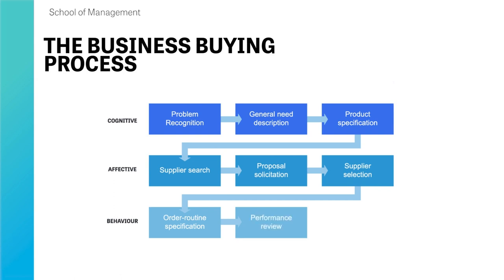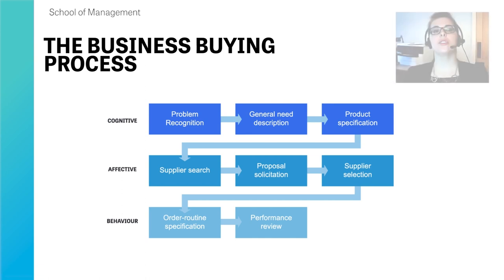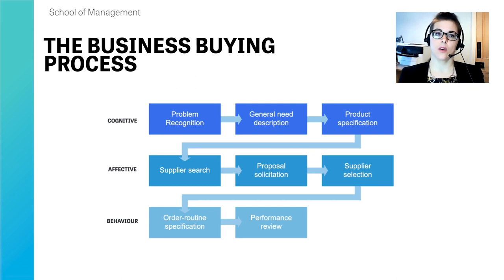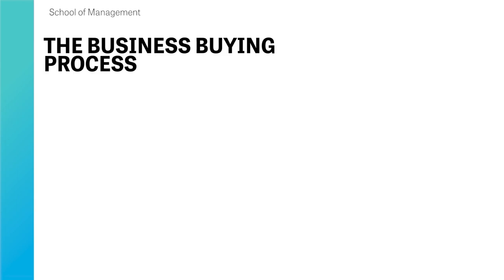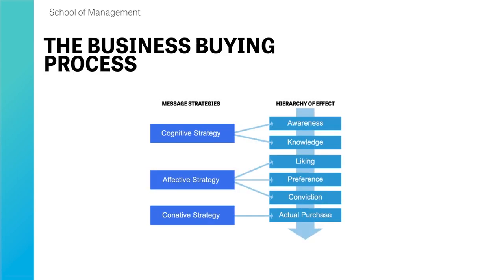Organizations then carry out performance reviews on both the product and the supplier — assessing how they're performing against the original proposal. If problems are recognized, the whole process starts again. At each stage, different types of behaviors take place, linked to the hierarchy of effects. And while we'd love it to be a linear process, both consumers and businesses often jump back and forth within that process.